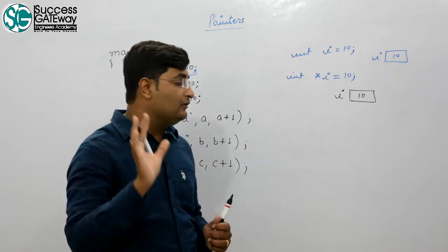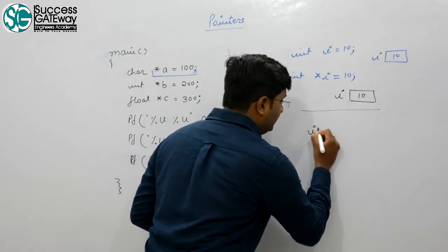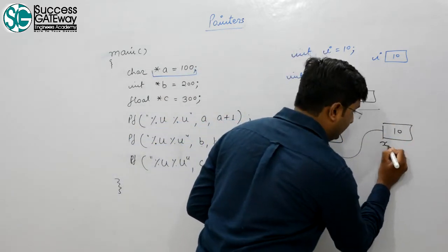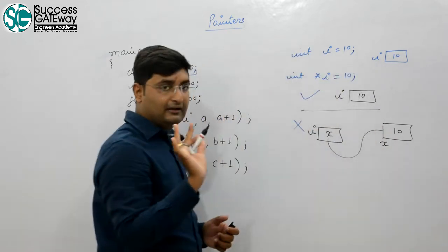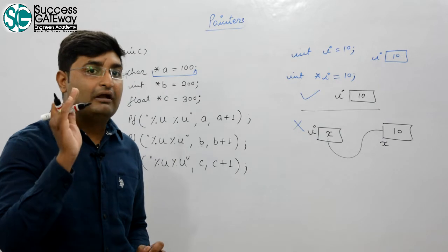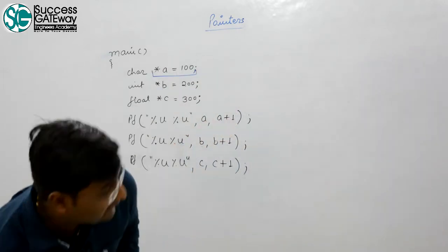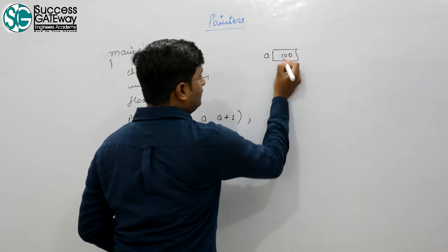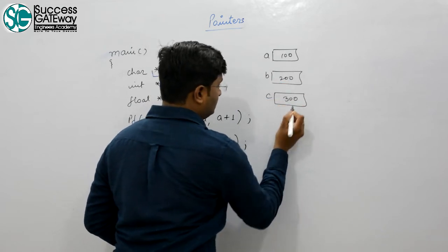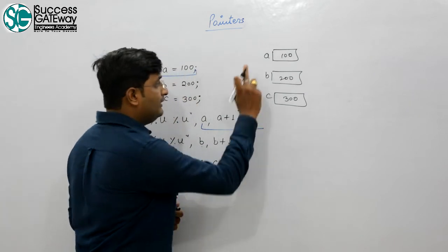So a is holding 100, b is holding 200, and c is holding 300. The printed value of a is 100. Now the tricky part: what is the value of a + 1?